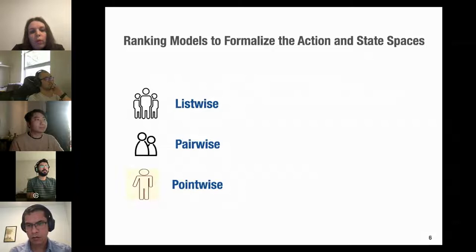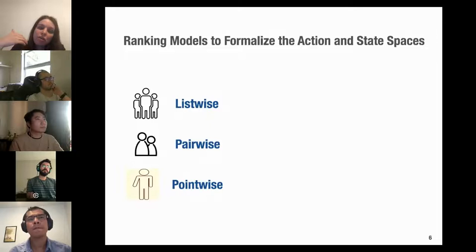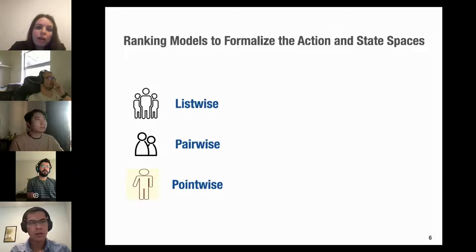We model the sequential interactions between the CI environment and the test case prioritization agent as an RL problem, using ranking models including listwise, pairwise, and pointwise approaches.